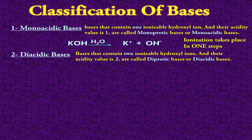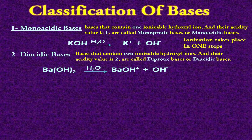The second type of bases is diacidic bases or diprotic bases. These bases contain 2 ionizable hydroxyl ions and their acidity value is 2. An example is barium hydroxide — barium belongs to Group 2A of the periodic table, so its valency is 2, and 2 hydroxyl ions are attached to it. The formula of barium hydroxide is Ba(OH)₂. When it is dissolved in water, out of these 2 OH ions, only one is removed in the first step, and the remaining one stays attached with barium.